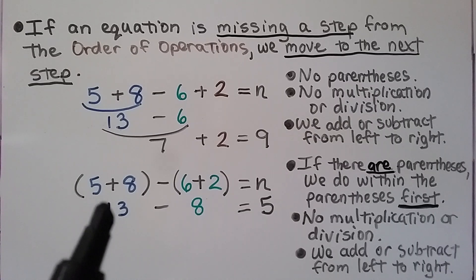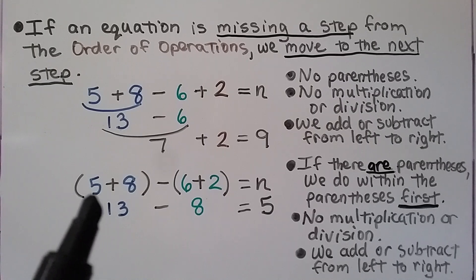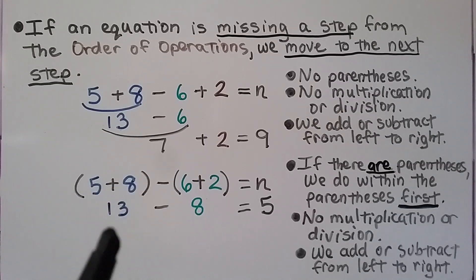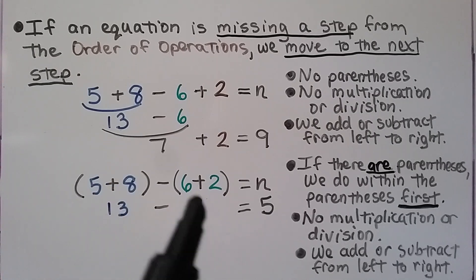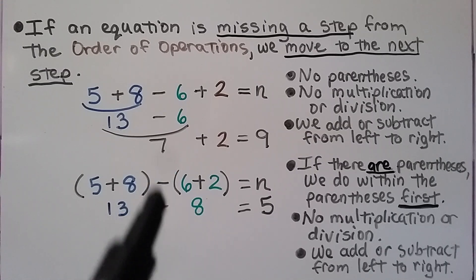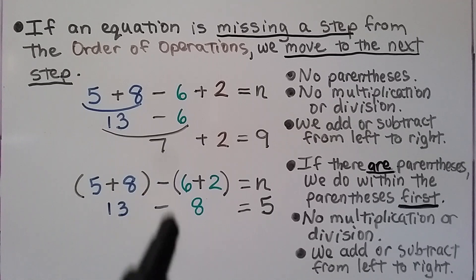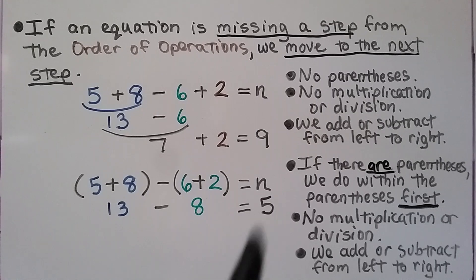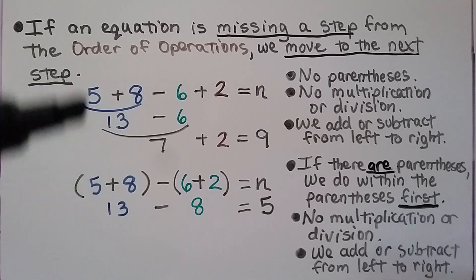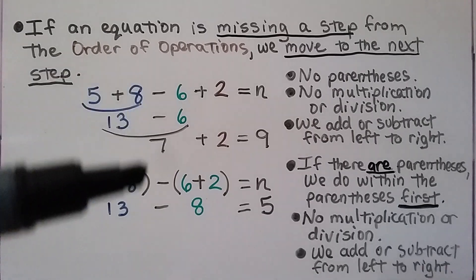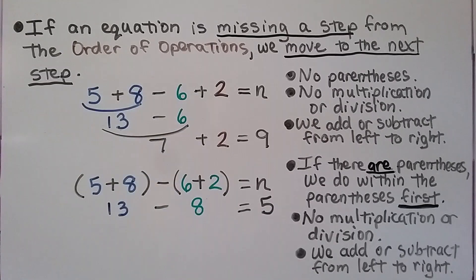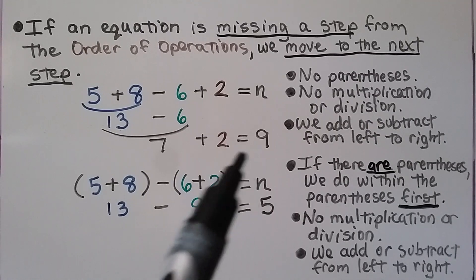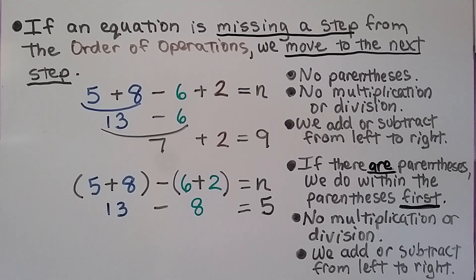If there are parentheses, we do within the parentheses first. With parentheses around 5 plus 8 and separately around 6 plus 2: 5 plus 8 equals 13, and 6 plus 2 equals 8. Then we add or subtract from left to right — 13 minus 8 equals 5. The same digits give different answers depending on whether there are parentheses or not.